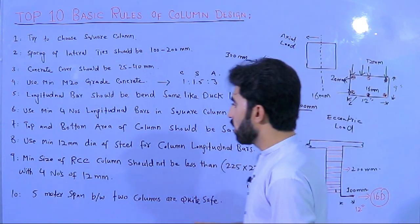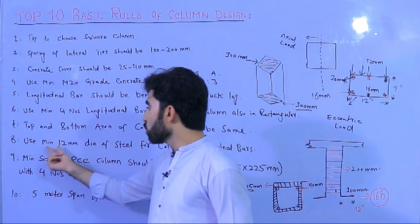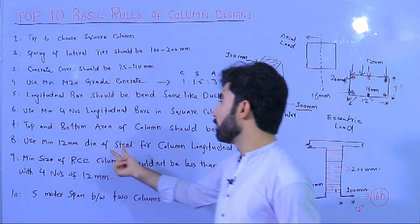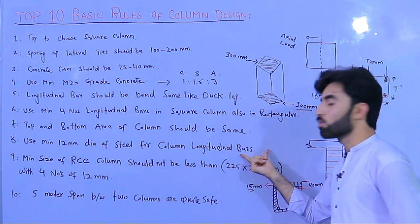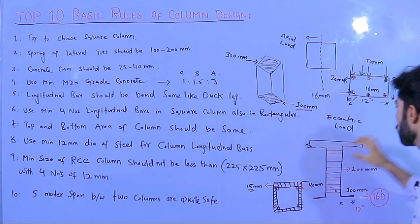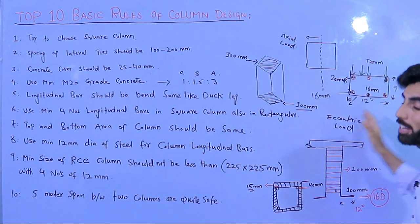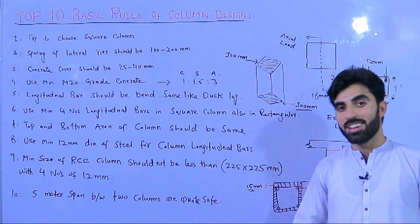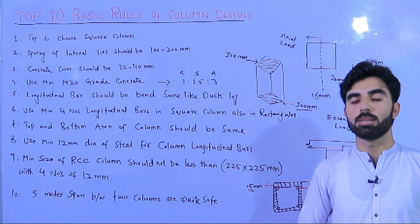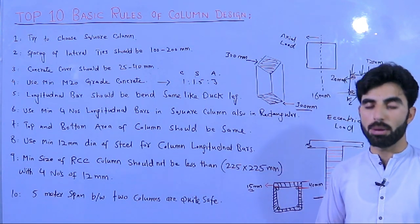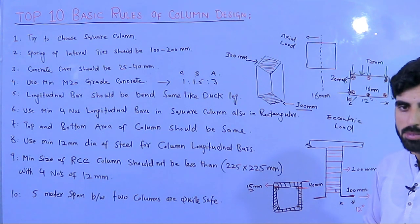The eighth basic rule: use a minimum of 12 mm diameter steel bars for longitudinal bars in RCC columns. Do not use 10 mm or 8 mm diameter bars.